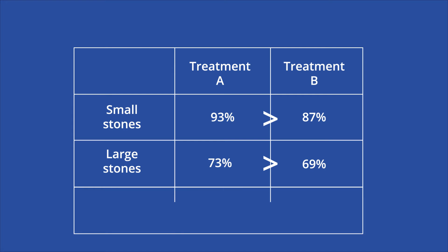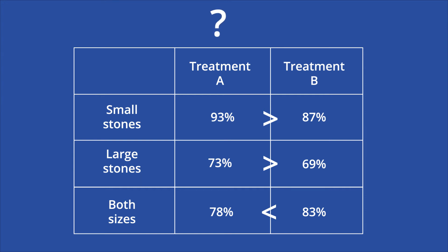However, when the two patient groups were collapsed into a single count for each treatment, the study found that treatment A was successful for 78% of all of its kidney stone patients — both small and large — while treatment B had a success rate of 83%. This result is paradoxical because treatment A was more effective in both subgroups of patients, but treatment B showed greater overall effectiveness.